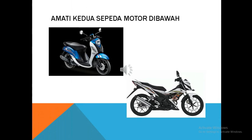Yang pertama adalah transmisi otomatis, atau yang disebut sekarang dengan Matic. Transmisi otomatis adalah sepeda motor yang dalam pengoperasiannya tidak ada pemindahan gigi. Selain itu, di sistem Matic ini penerus tenaga menggunakan V-Belt. Dan yang ketiga, di sistem Matic, besar kecilnya puli yang menyebabkan pertambahan kecepatan pada sepeda motor.